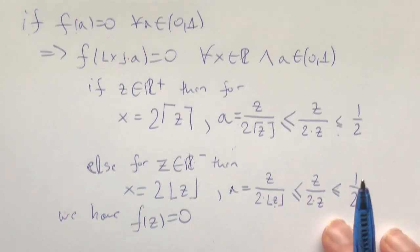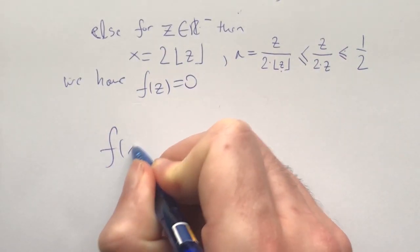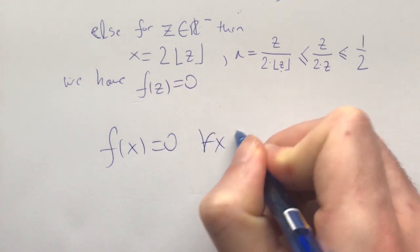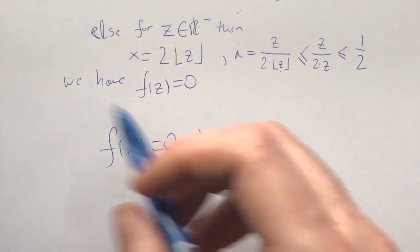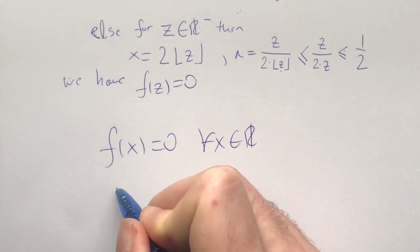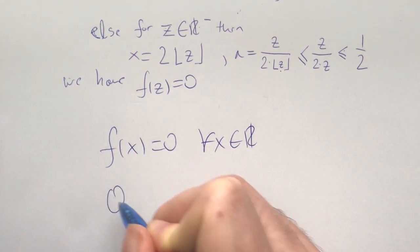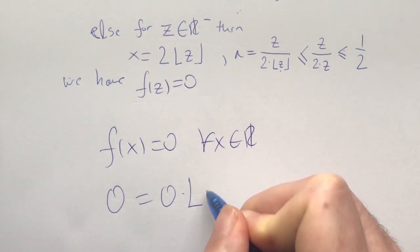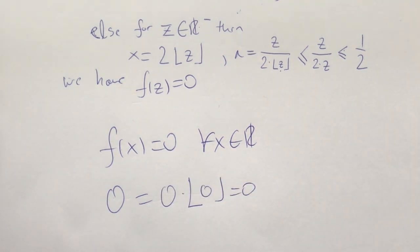Since this holds for any real number z, f of x equals zero for all real x. Plugging into the original, we get zero equals zero times the floor of zero, which is zero. So this works. Now let's sum it all up.